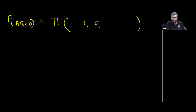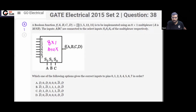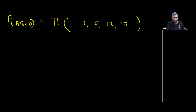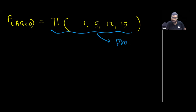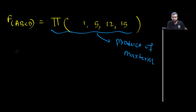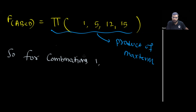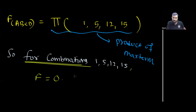This function is given as a product of maxterms: 1, 5, 12, 15. Since it is given as a product of maxterms, it means the function is 0 for these combinations — for combinations 1, 5, 12, 15 — and the function value is 1 for all other combinations.